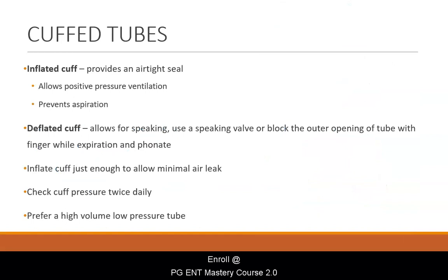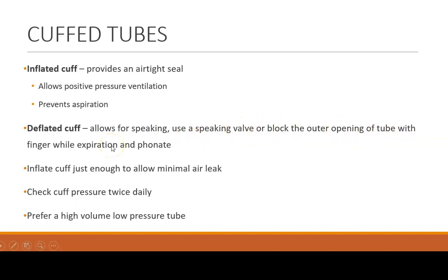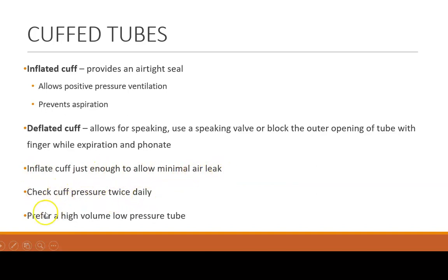Moving on to cuffed tubes. When the cuff is inflated, it provides an airtight seal, allows for positive pressure ventilation, and prevents aspiration. When you deflate the cuff, it allows for speaking using a speaking valve, or you can block the outer opening of the tube with a finger and expire and phonate. You should inflate the cuff just enough to allow minimal air leak. Check the cuff pressure twice daily. Always prefer a high volume, low pressure tube.